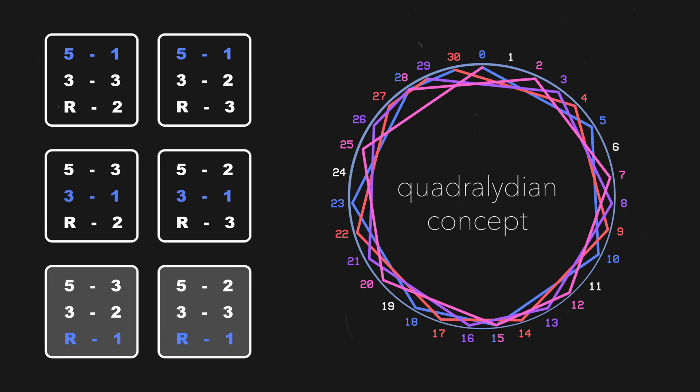Final observation: blocking sequences aren't Lydian-specific. They'll work with any mode, even chromatically. You could have a quadraphrygian modulation, or, god forbid, a quadrolocrian modulation, if you wanted to. In fact, it's probably more accurate to call this idea the quadrimodal concept. So if you're ever on your compositional journey and you find yourself in 31 EDO and you need a way to modulate to another key in a way that highlights the modal structure that you're already in, this may be a great way to do it.